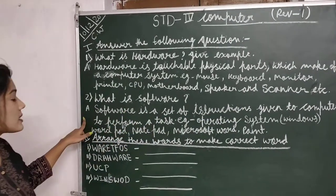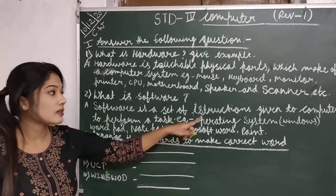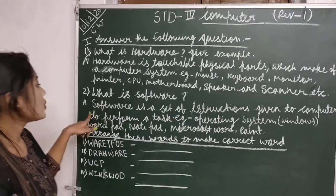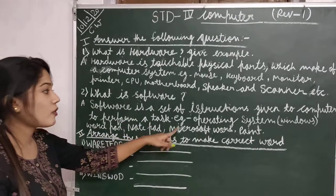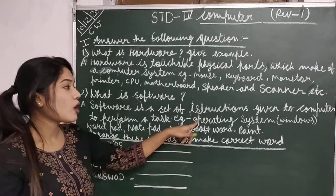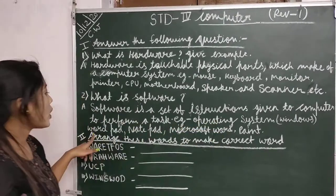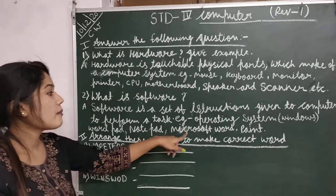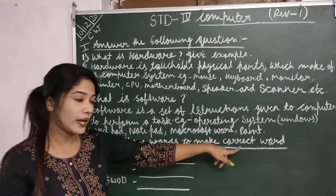Answer: software is a set of instructions given to a computer to perform a task. For example: operating system, WordPad, Notepad, Microsoft Word, and Paint.